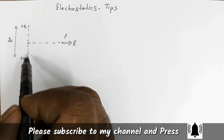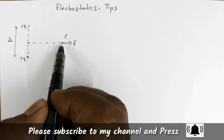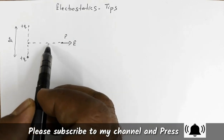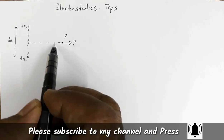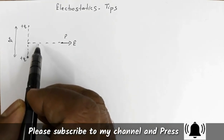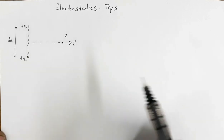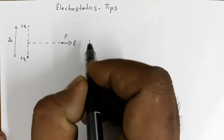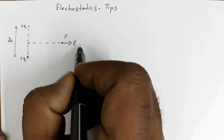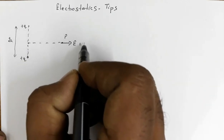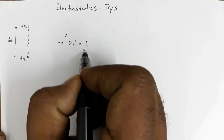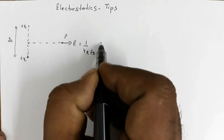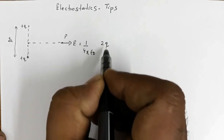The value of this electric field is (1/4πε₀) × 2q divided by (a² + y²)^(3/2), where y is the distance...